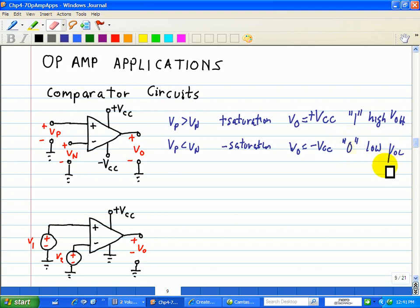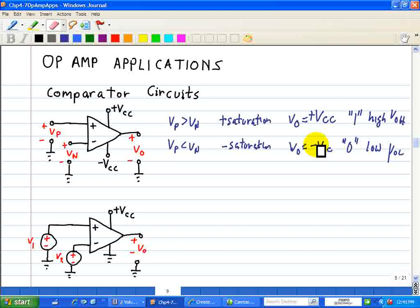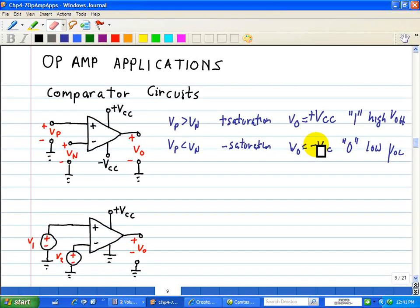So that's how a comparator works. It either rails to the positive VCC or to the minus VCC. In digital logic terminology, the comparator output is said to be high, which is a 1, when VP is greater than VN, and low, which is a digital zero, when VP is less than VN.